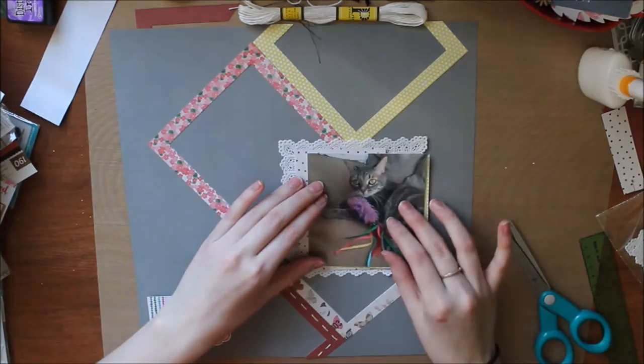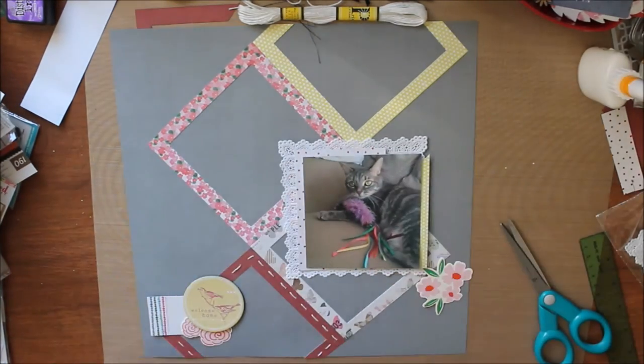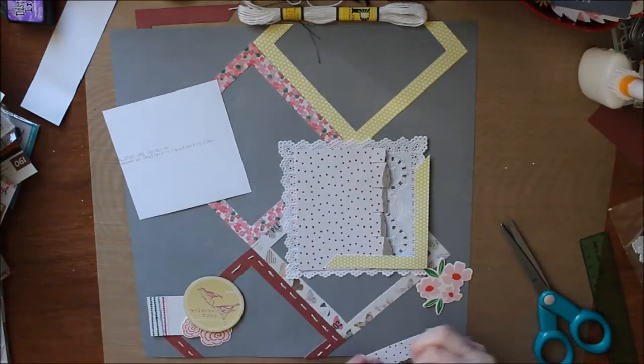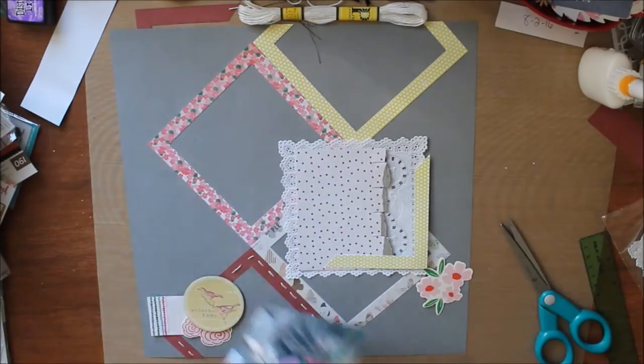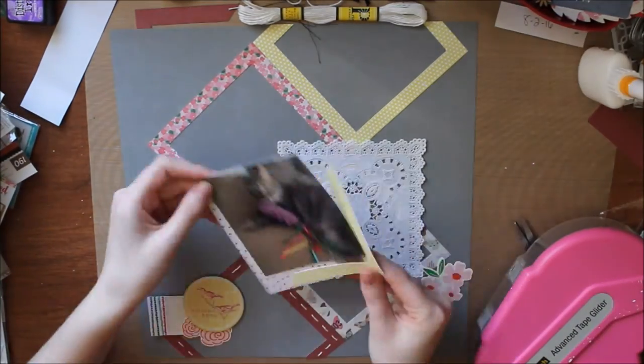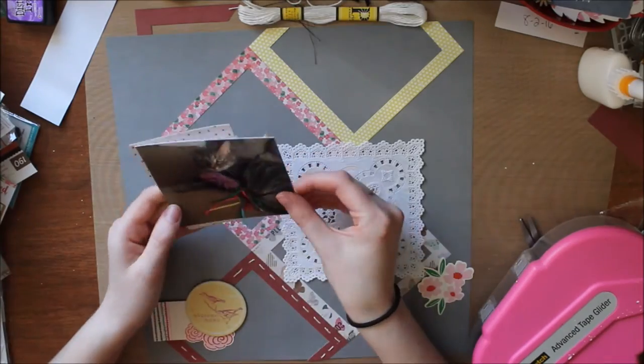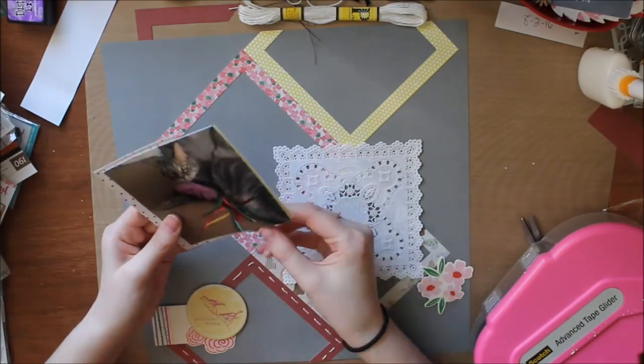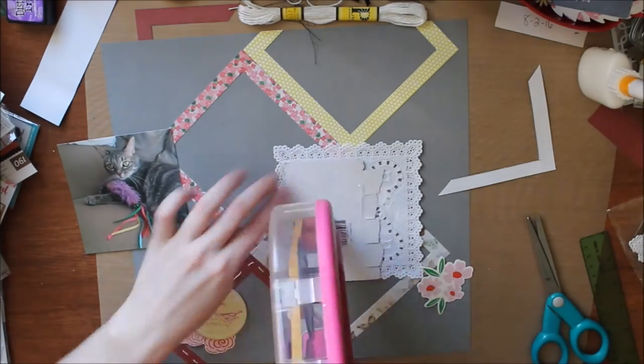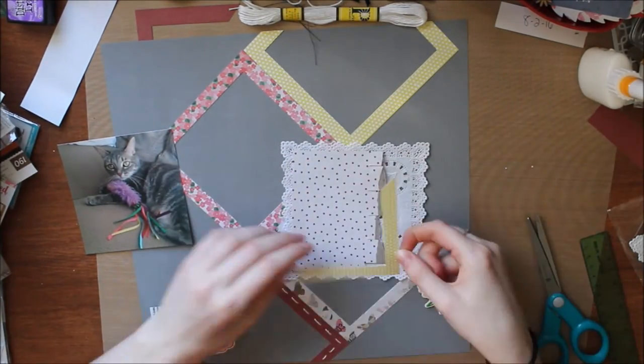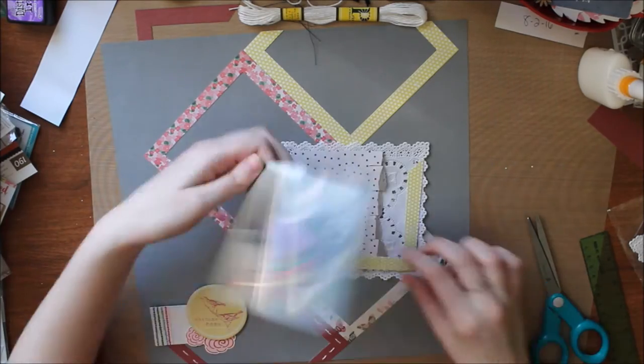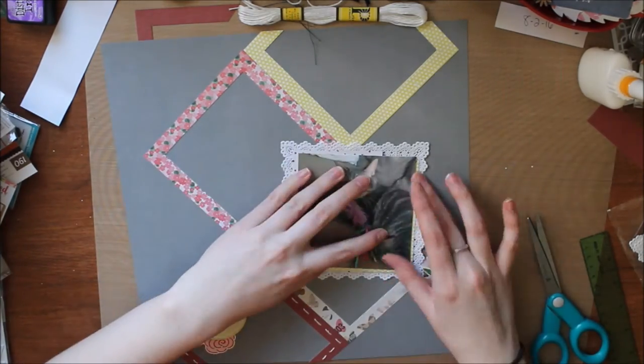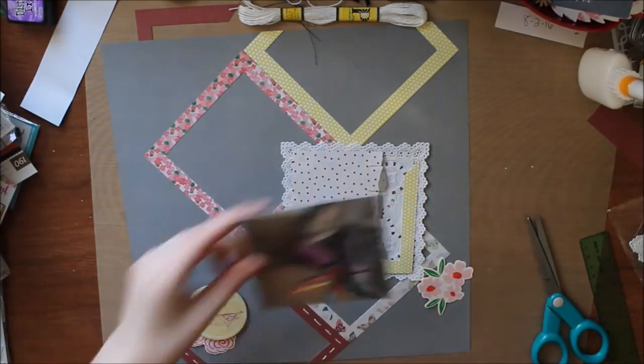So I decided I am going to use that yellow strip there. So I'm going to start gluing everything down. Of course after I write down the date because I don't want to forget the date. So I'm going to fiddle with this for a while which is really annoying but my photo was an odd size and then the doily's an odd size and everything's an odd size in this situation.